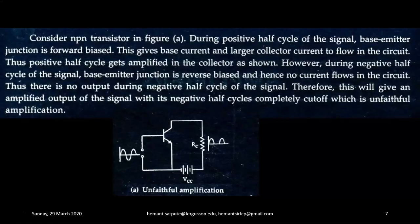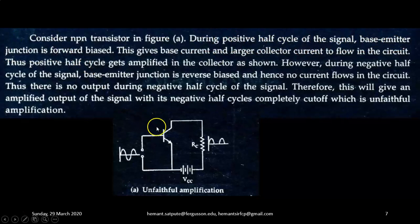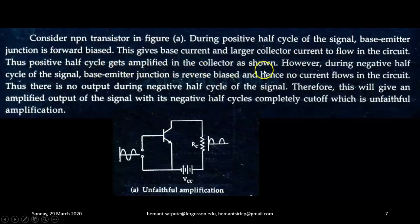Let us see the meaning of proper zero signal collector current. Consider an NPN transistor as shown in figure A. During the positive half cycle of the signal, the base-emitter junction is forward biased. This gives base current and a larger collector current to flow in the circuit. Thus, the positive half cycle gets amplified in the collector as shown.